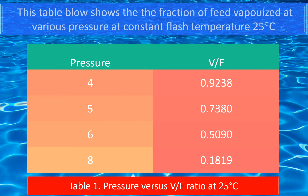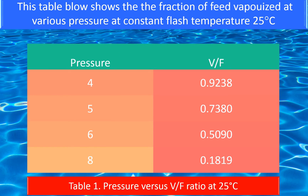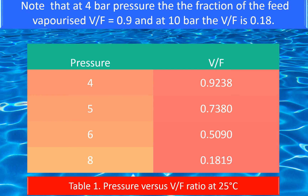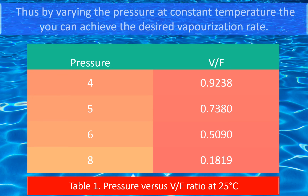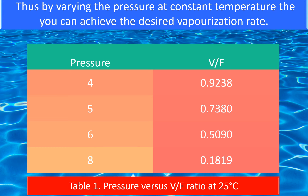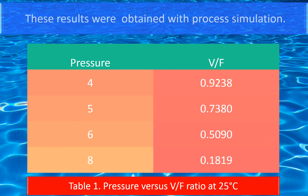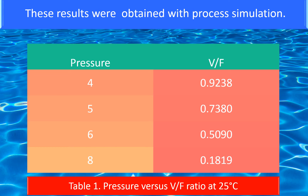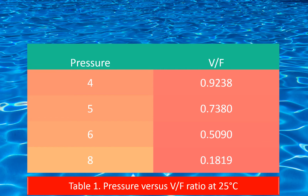This table below shows the fraction of feed vaporized at various pressures at a constant flash temperature of 25 degrees centigrade. Note that at 4 bar pressure, the feed vaporized V/F is 0.9, and at 10 bar the V/F is 0.18. Thus, by varying the pressure at constant temperature, you can achieve the desired vaporization rate. These results were obtained with process simulation.